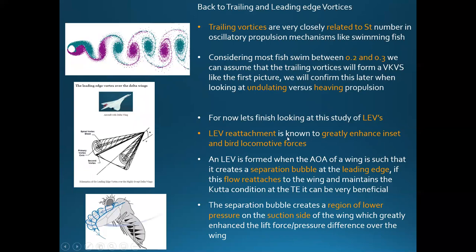Setting trailing vortices aside for now, let's talk about leading edge vortices. A leading edge vortex forms when the angle of attack of a wing is such that it creates a separation bubble at the leading edge, like in this picture of a bee. This is very beneficial when the flow reattaches to the wing and maintains the Kutta condition, because you avoid the negative effects of full flow separation like greatly increased pressure drag.